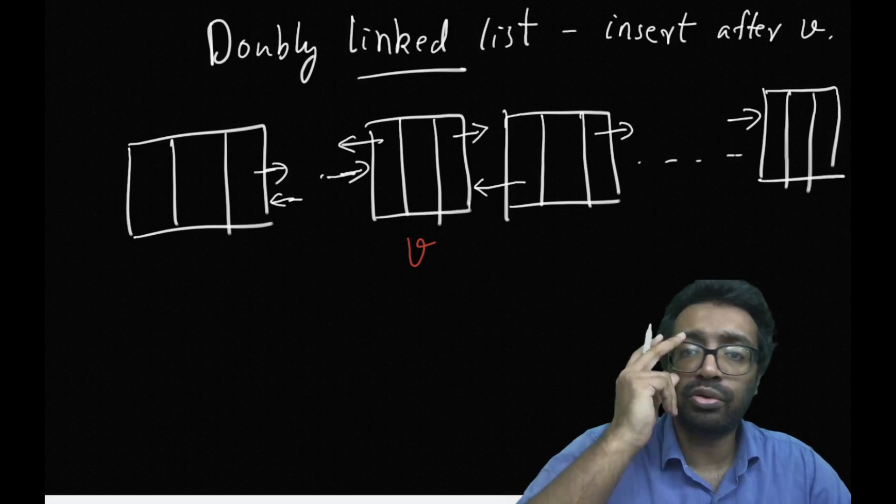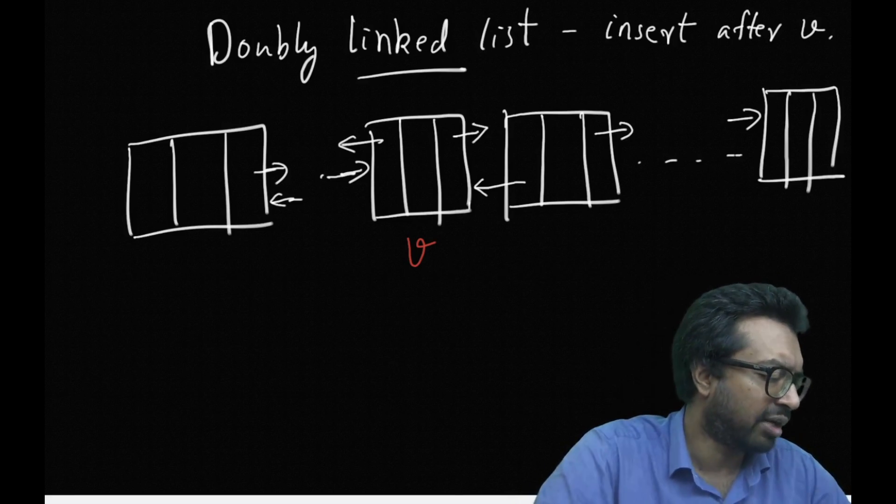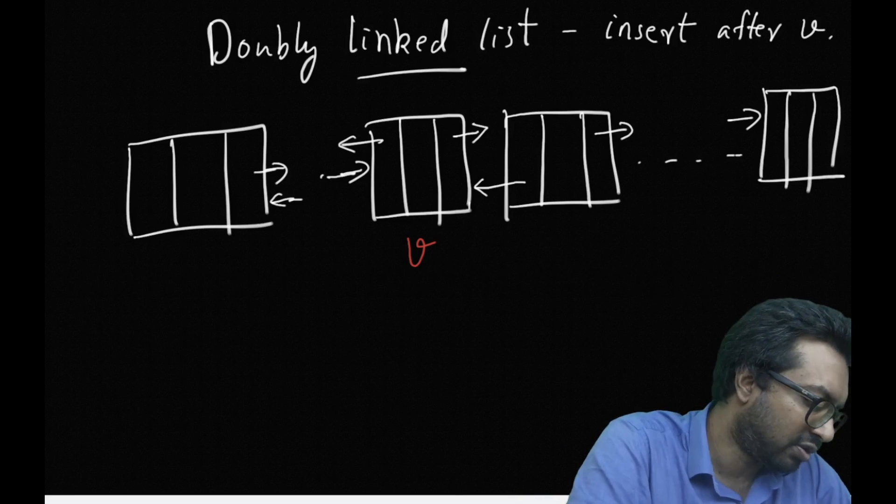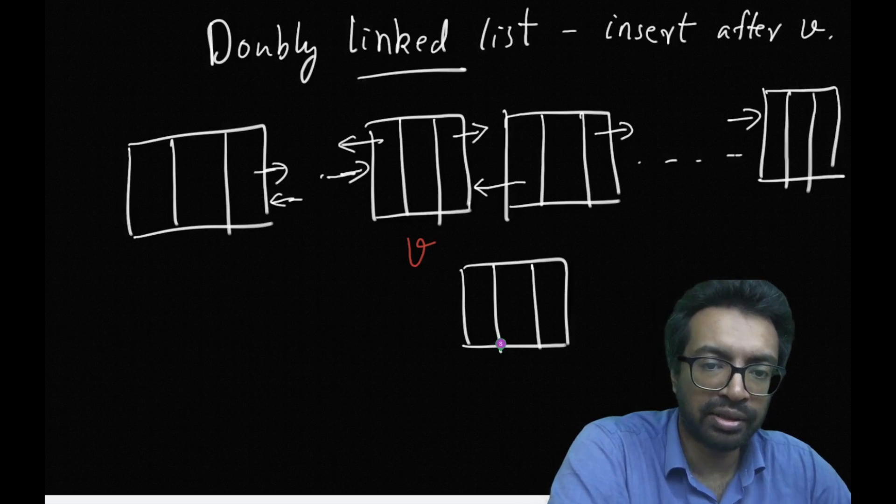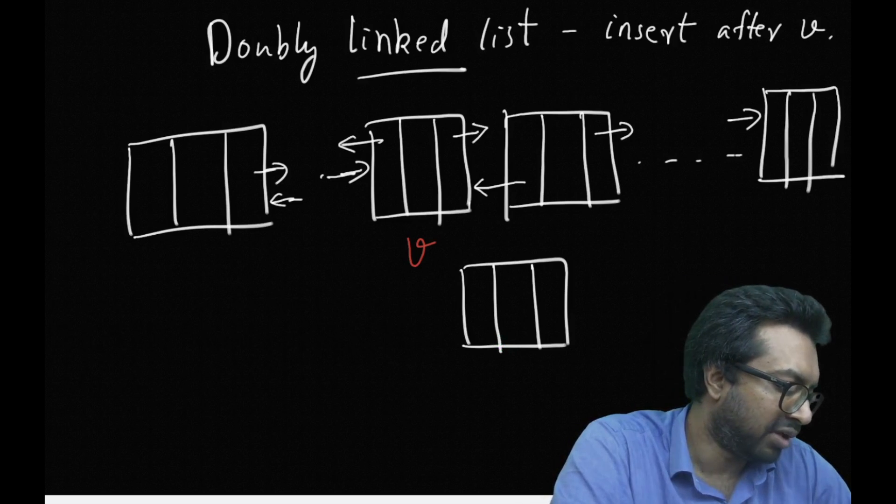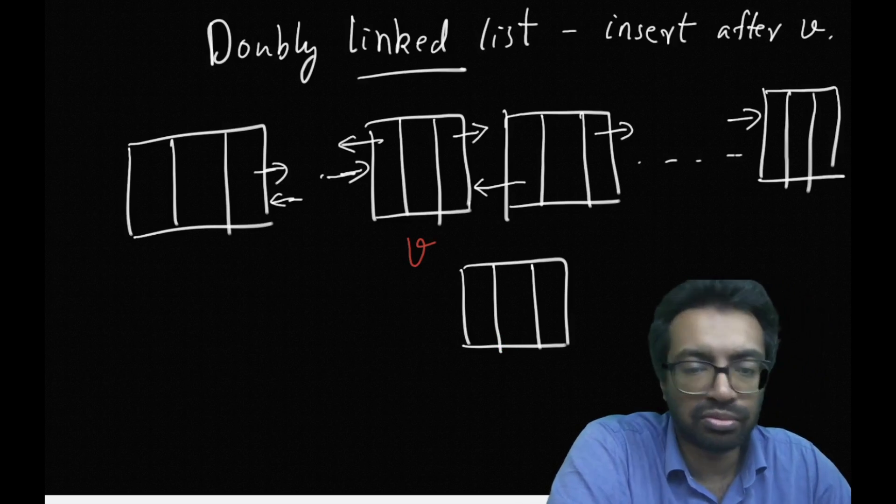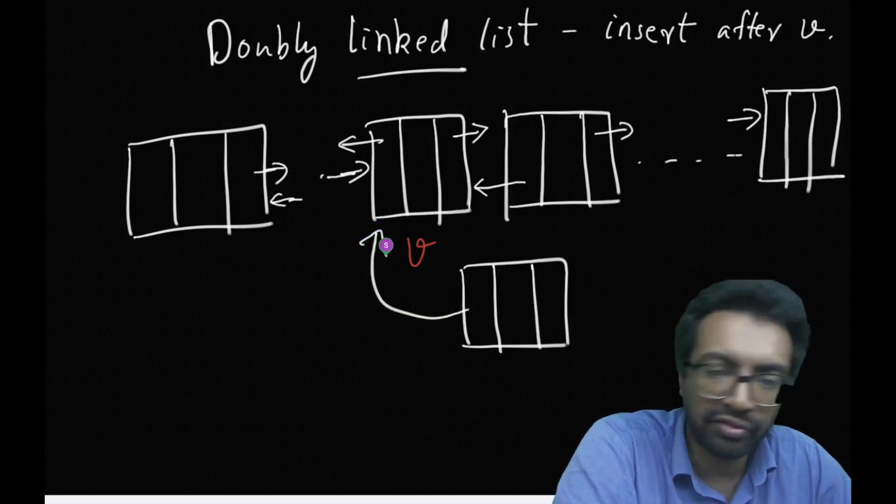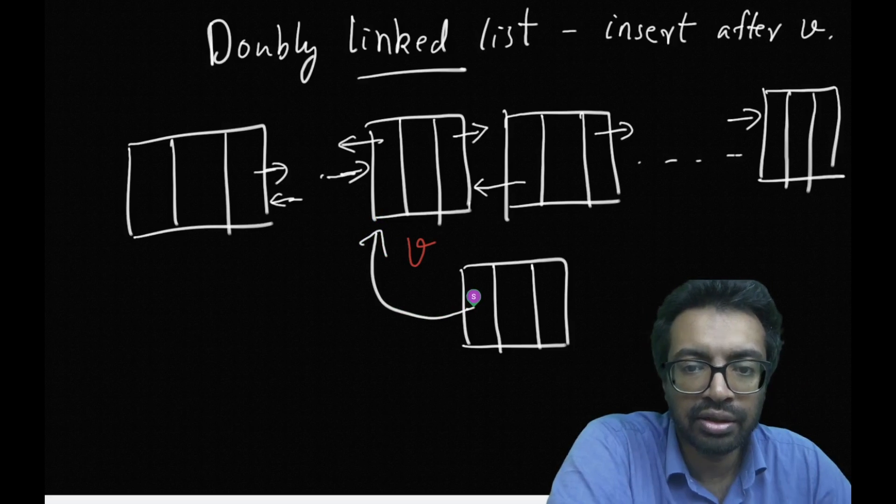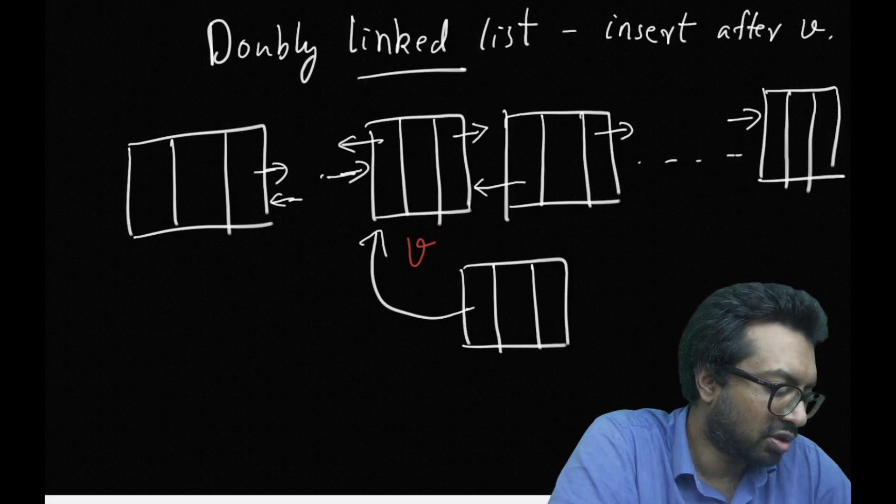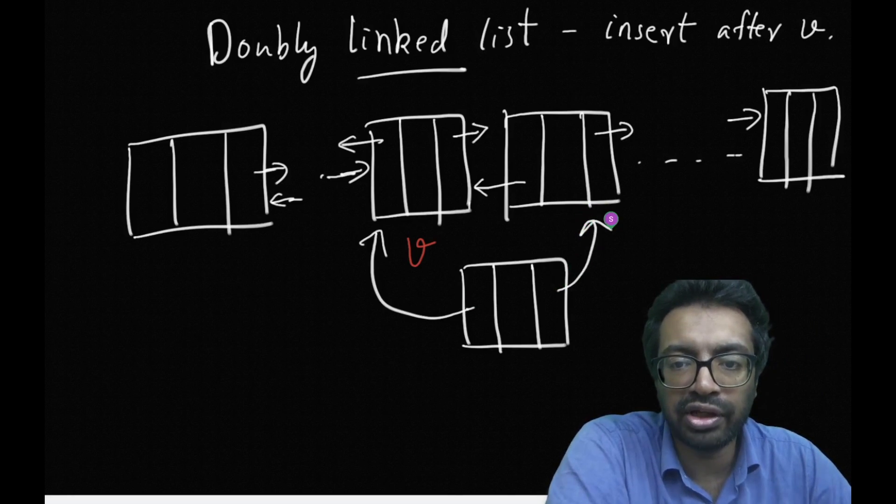What will I do if I want to insert a node after B? I am going to create a new node first of all. I have this new node and then the prev of this node is obviously going to point to B and the next of this node is obviously going to point to the node after B.